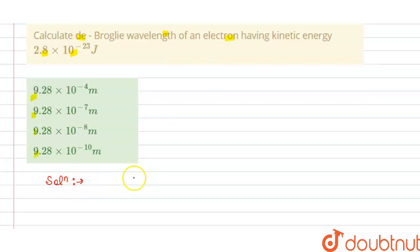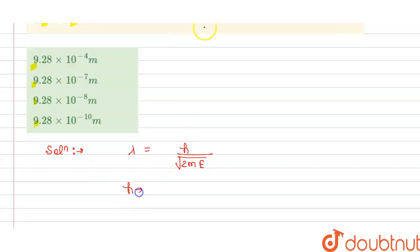So the solution of this question is, we have the wavelength that is lambda is H divided by under root 2 mass of electron and E is the kinetic energy. So we can write here,